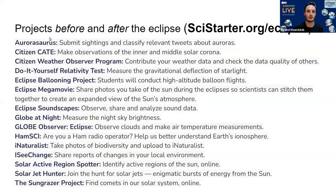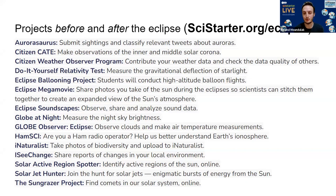These are the 15 projects listed on SciStarter.org/eclipse. Aurorasaurus is one you can contribute to any time of the year — you can either submit sightings or classify tweets about auroras. It searches the Twitter database for posts including the word 'aurora,' and you simply filter out those used in the context of this natural phenomenon. Another project is Citizen CATE, to make observations of the inner and middle solar corona.